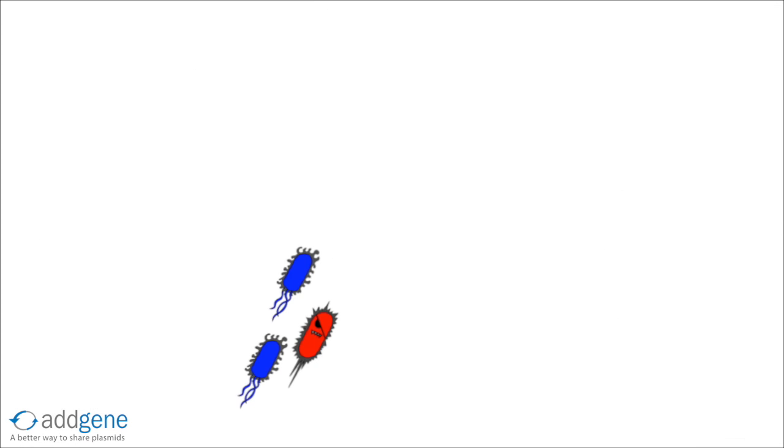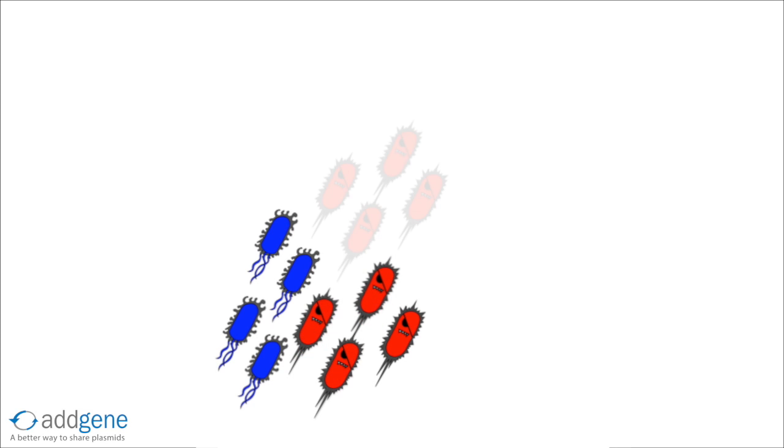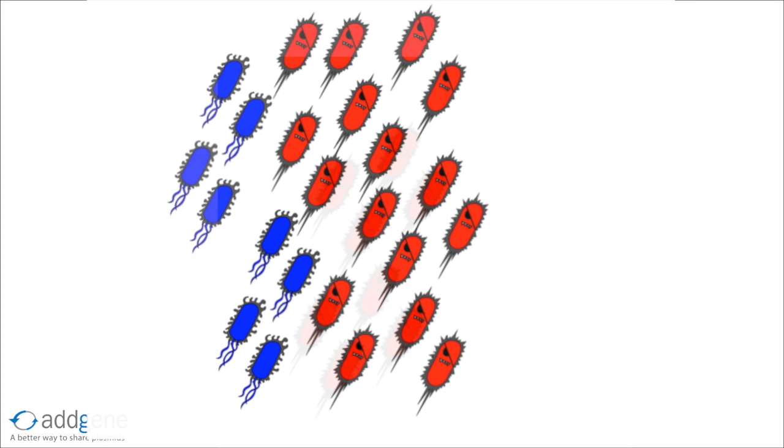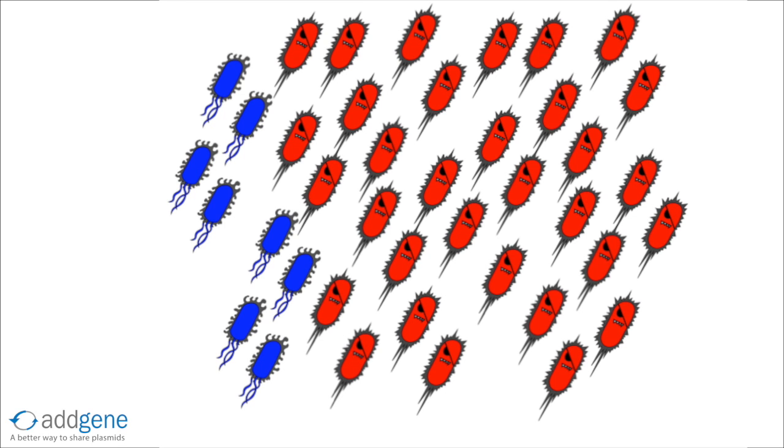If you were to simply take a glob of bacteria from this mixed population and grow it in a liquid culture, one of the mutants could potentially take over the culture and affect your experiment.